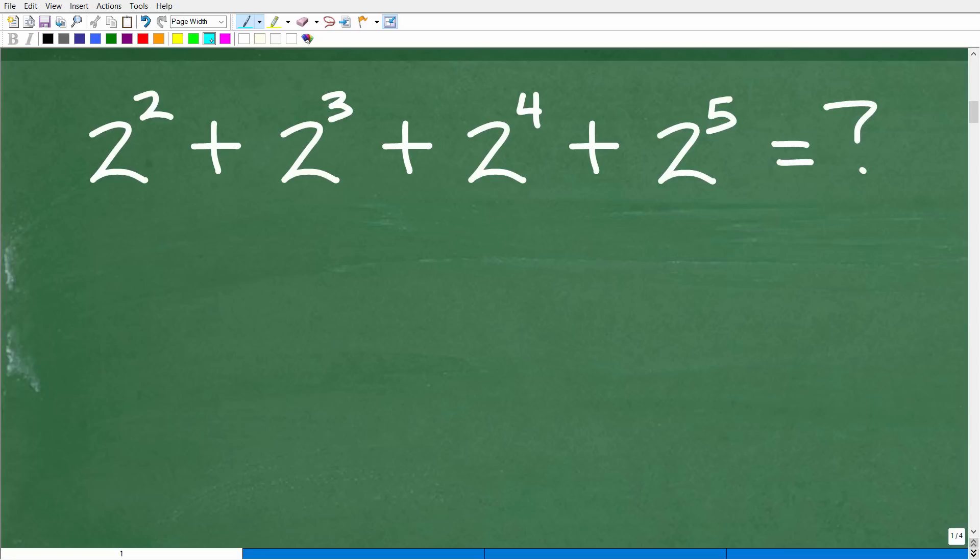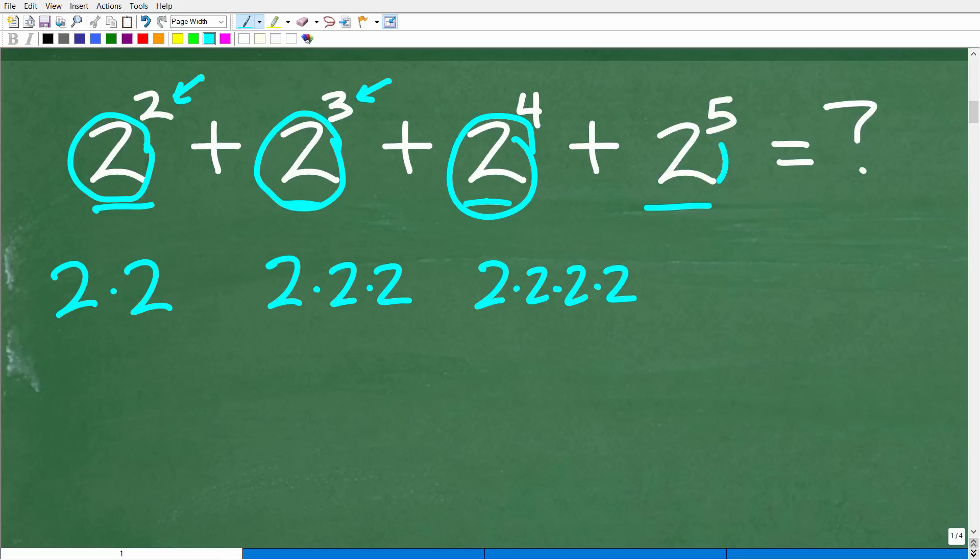Okay. Now, the first thing we need to understand is what do these little things right here mean? Now, I'm kind of assuming that most of you know what 2² or 2³ mean, but maybe some of you don't. So let's just kind of review this. 2² means take 2 and multiply it by itself two times. So that's 2 × 2. 2³ means take 2 and multiply by itself three times. So that's 2 × 2 × 2. 2⁴, you kind of get the idea, right? Take 2 and multiply it by itself four times. And 2⁵ means take 2 and multiply it by itself five times.